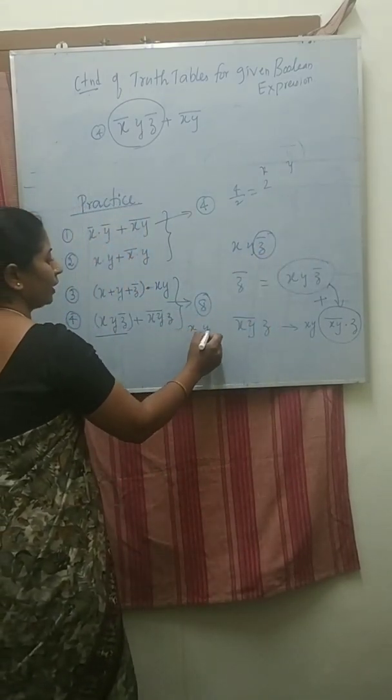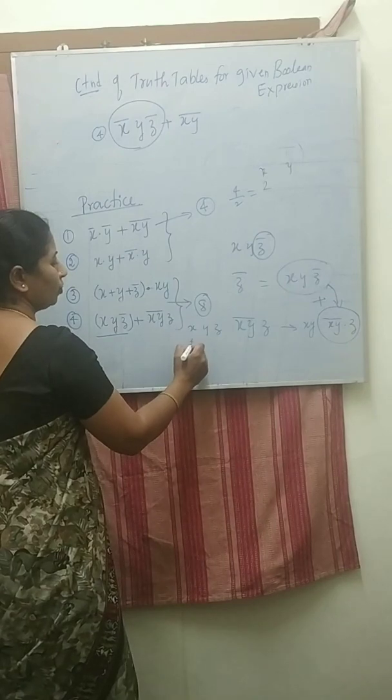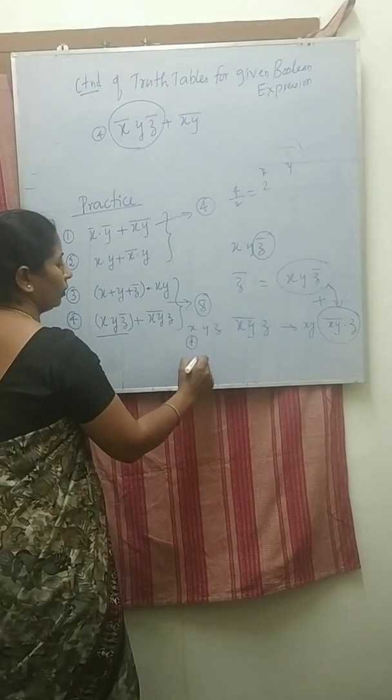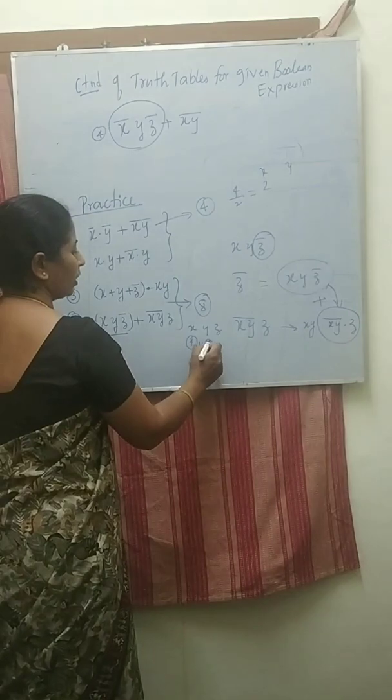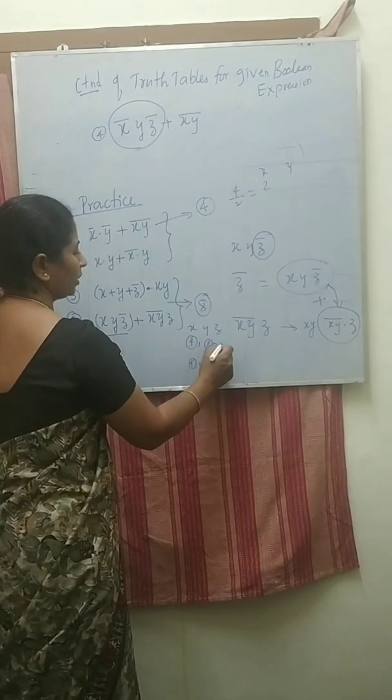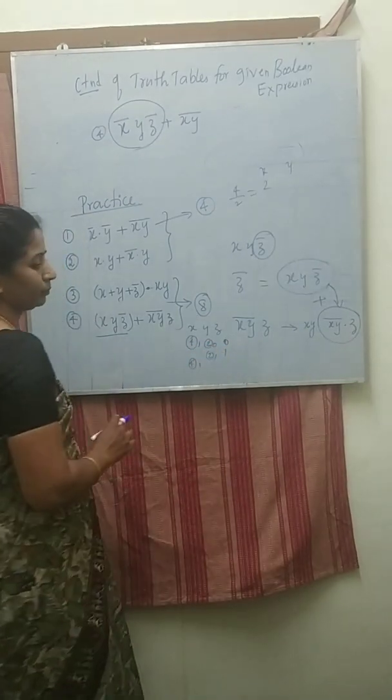Then here XYZ: first four are zero, then next four are one. Here two are zero, two are one. Zero one.